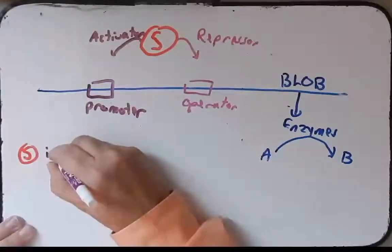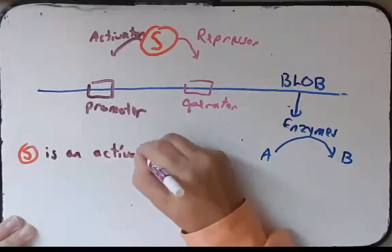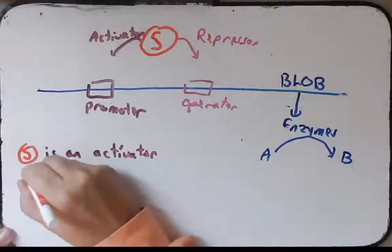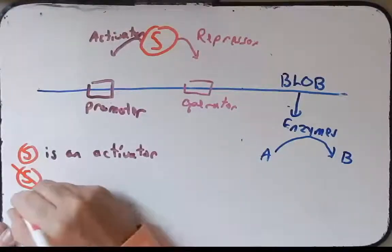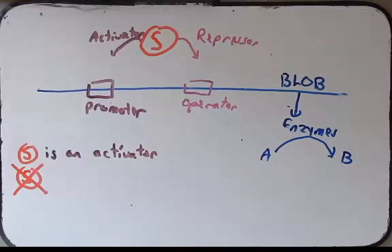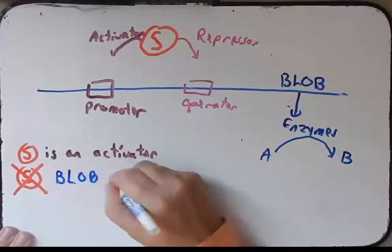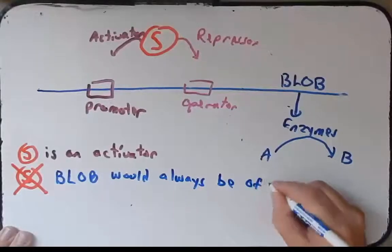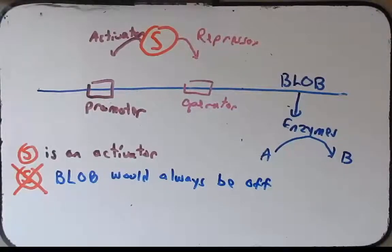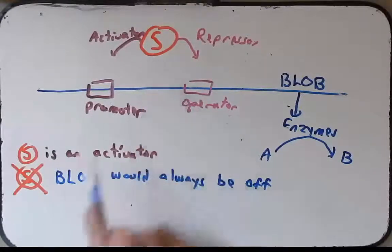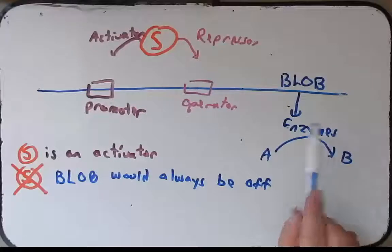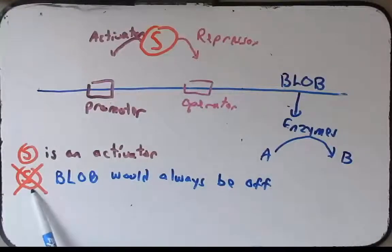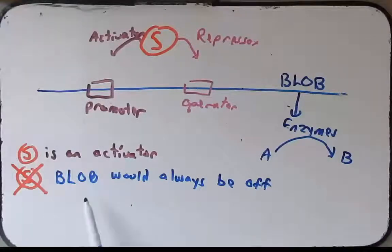So if S is an activator, then if we mutated S, you would expect that the blob operon would always be off, transcriptionally off, based on what we've discussed so far in this class. That is because if S is an activator and is necessary to activate transcription, if we remove it by mutating it, we would presume that it would not ever be able to turn on this operon. So we would predict that if S is an activator and you mutated it, operon always off.